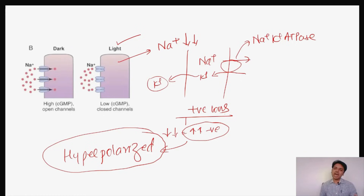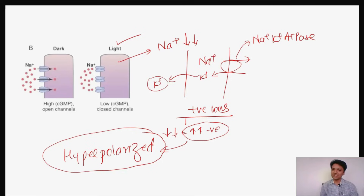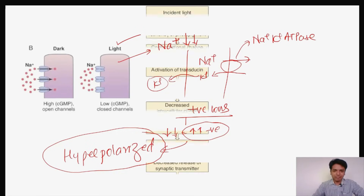The increase in negativity causes the cell to become hyperpolarized. So the activation of the rod, unlike any other sensory receptor, happens because of hyperpolarization, not depolarization. Depolarization occurs when a positive ion enters from outside, reducing intracellular negativity. Here the opposite happens — negativity increases — so the cell undergoes hyperpolarization.